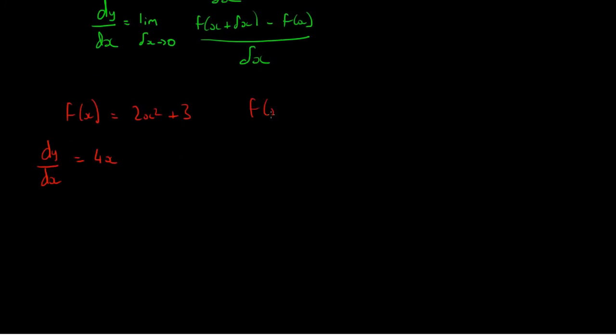Well, substituting this into our formula above, we could say that f of x plus delta x is equal to 2 times x plus delta x, or squared, because instead of x, we now have x plus delta x as our value, plus 3.